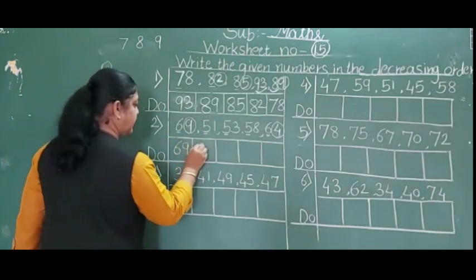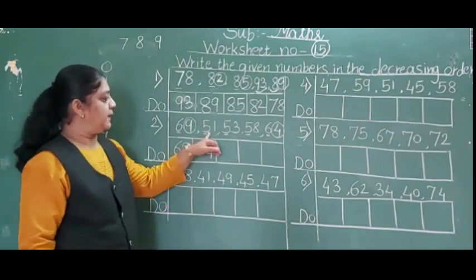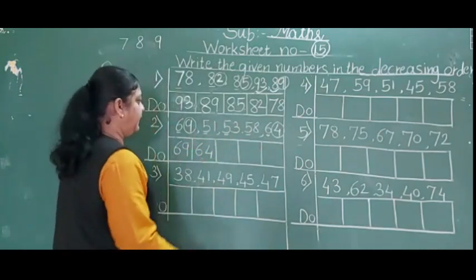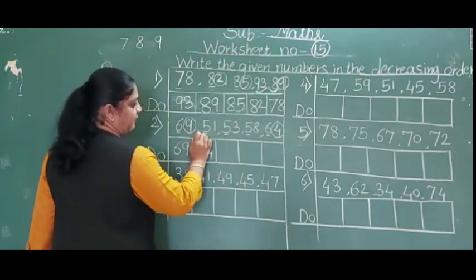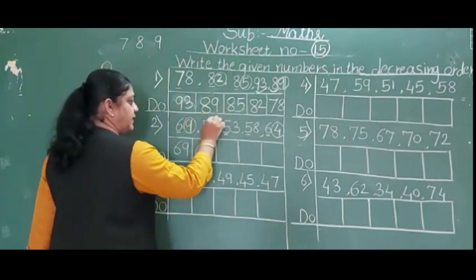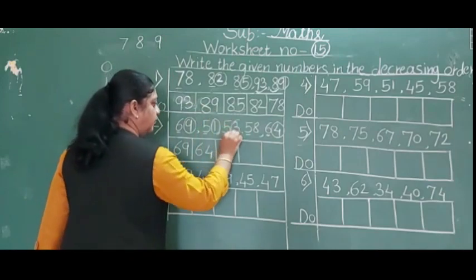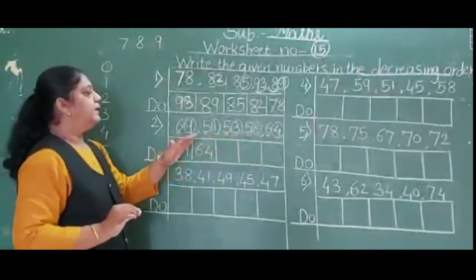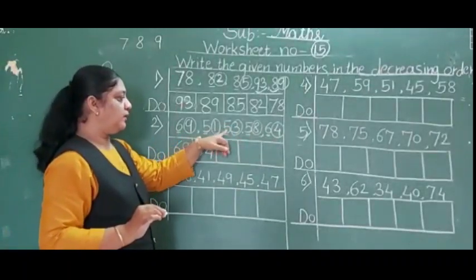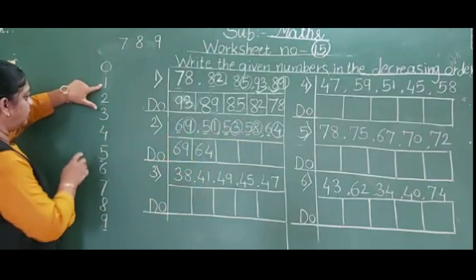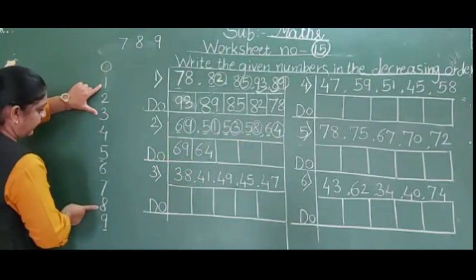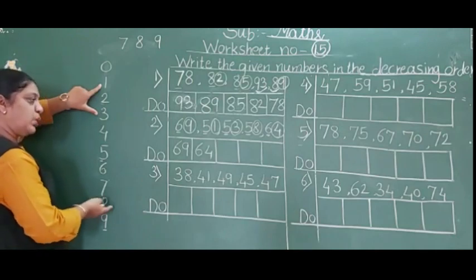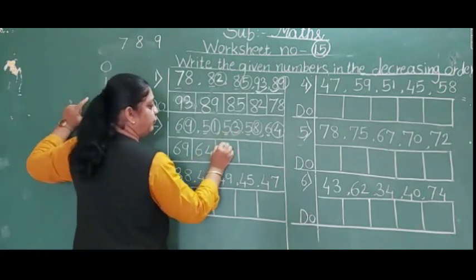Then 64. Now the 5-group: 51, 53 and 58. Second digits: 1, 3 and 8. Which is big? 8 is below, so 8 is the big number. So 58 comes next.